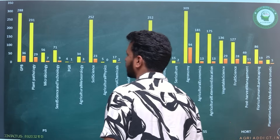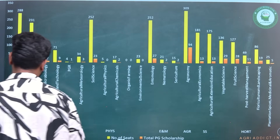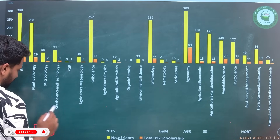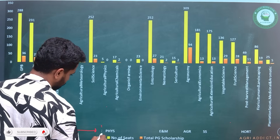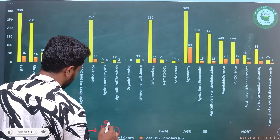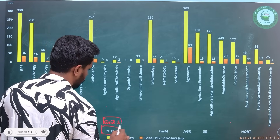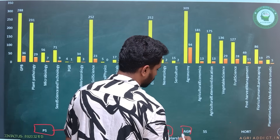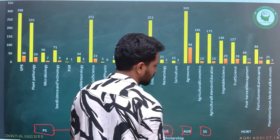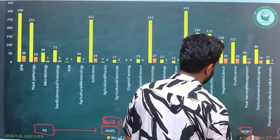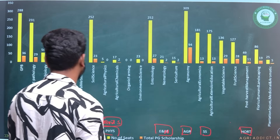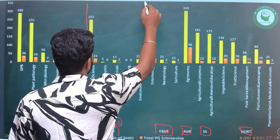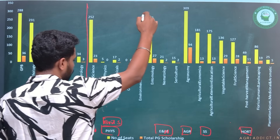Now in this video I'll give you a complete glimpse of the number of seats available for different subjects — the total number of seats plus the PG fellowships. I have listed out six different subjects here: Plant Science, Physical Science (commonly called Soil Science), Entomology, Nematology, Agronomy, Social Science, and lastly Horticulture. These are the six different subjects for which I have listed out the total number of seats and number of fellowship seats.